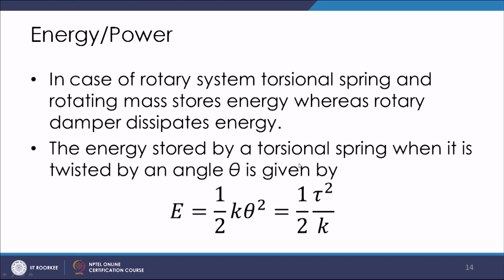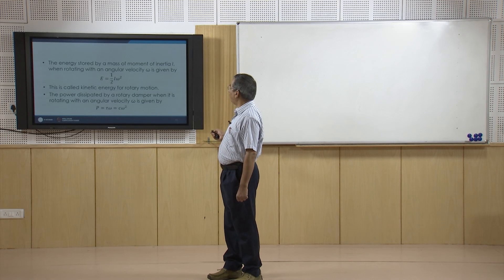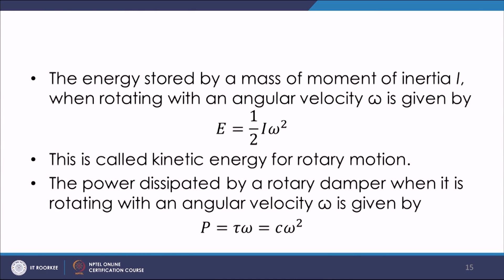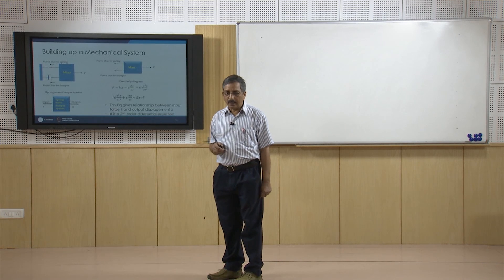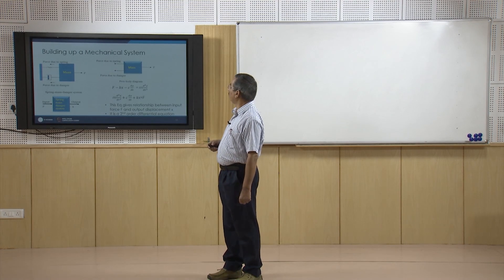The energy stored by a torsional spring twisted by angle θ is ½Kθ², or ½τ²/K. The kinetic energy stored by a mass with moment of inertia I rotating at angular velocity ω is ½Iω². The power dissipated by the rotary damper rotating at ω is τω, or Cω².